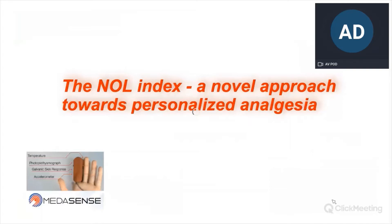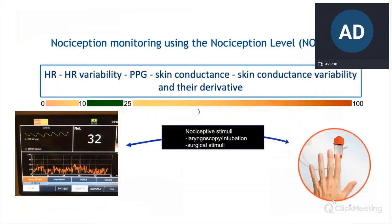As you know, and Frank already spoke about it, the nociception monitor is derived from four parameters: heart rate, heart rate variability, the pulse pressure, and skin conductance. During anesthesia and surgery, there are several quite strong nociceptive or painful stimuli, such as laryngoscopy and intubation, skin incision, and all sorts of other surgical stimuli up until closure of the skin at the end of surgery.